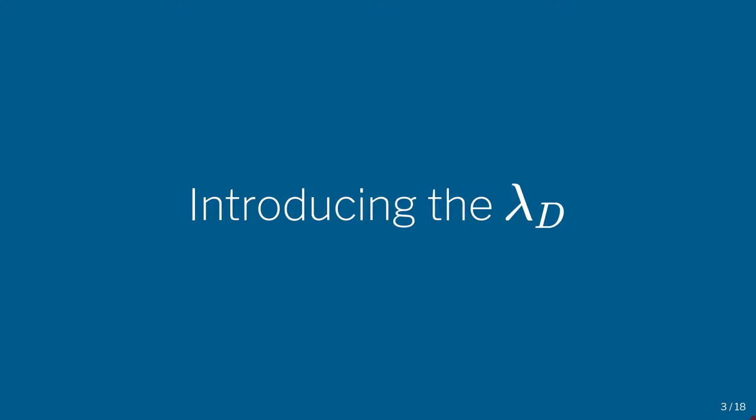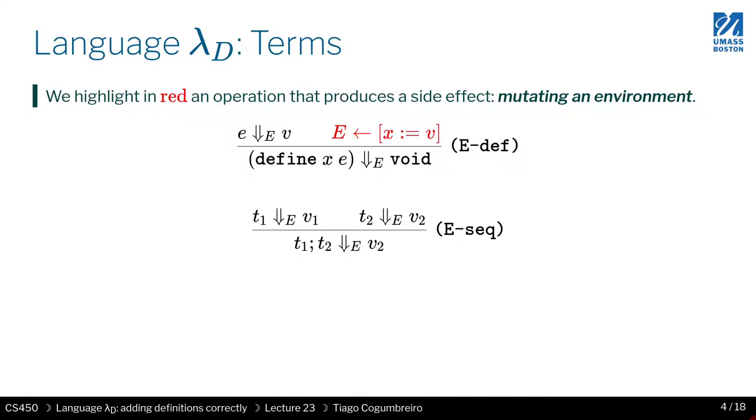So now we are ready to learn about Lambda D, which is an extension of the lambda calculus with mutable definitions. It follows the same semantics of Racket.